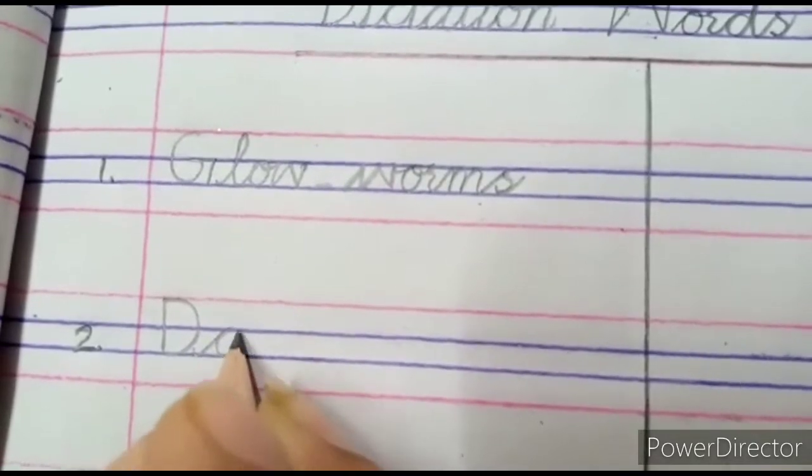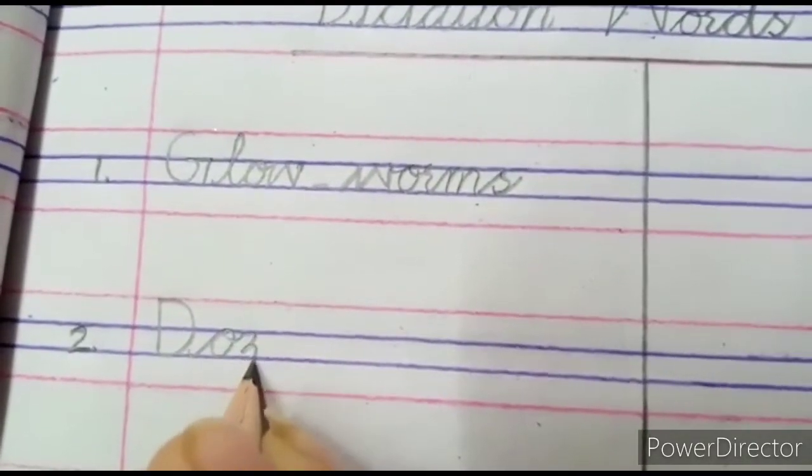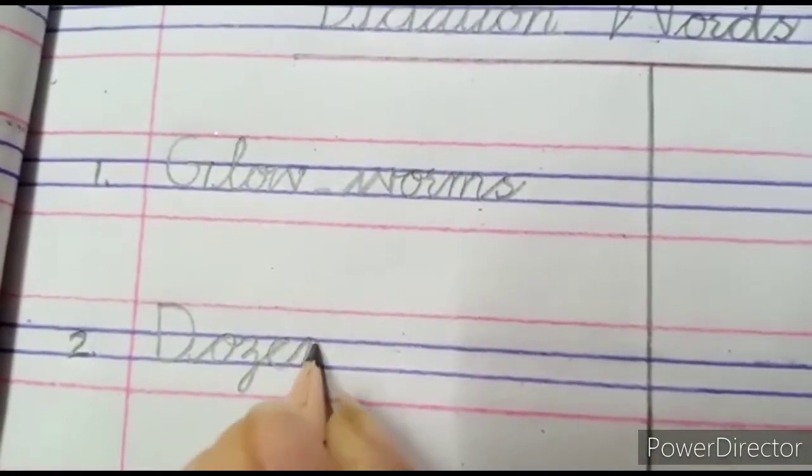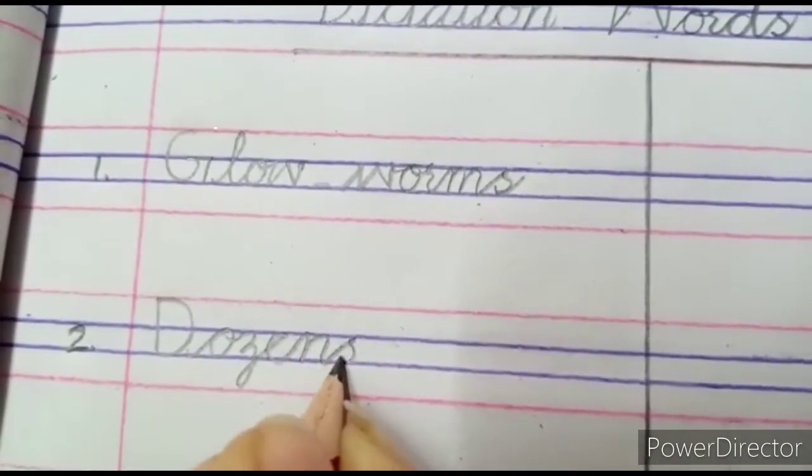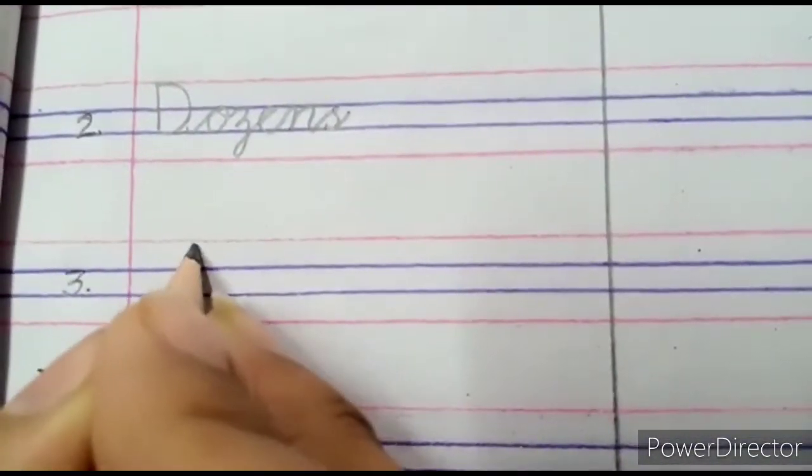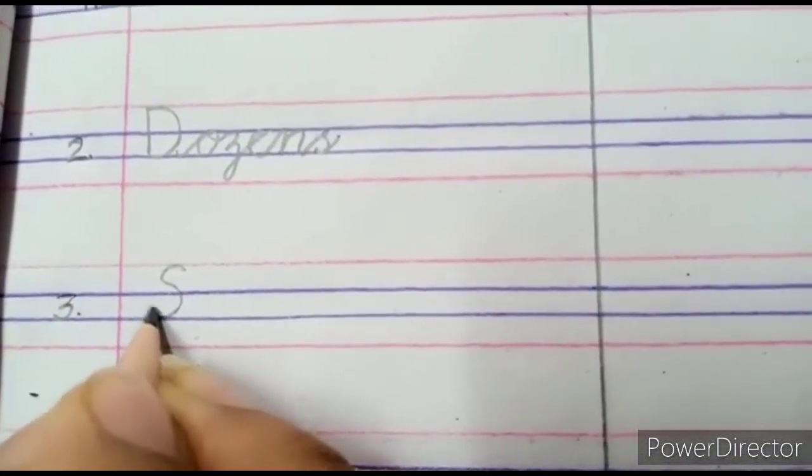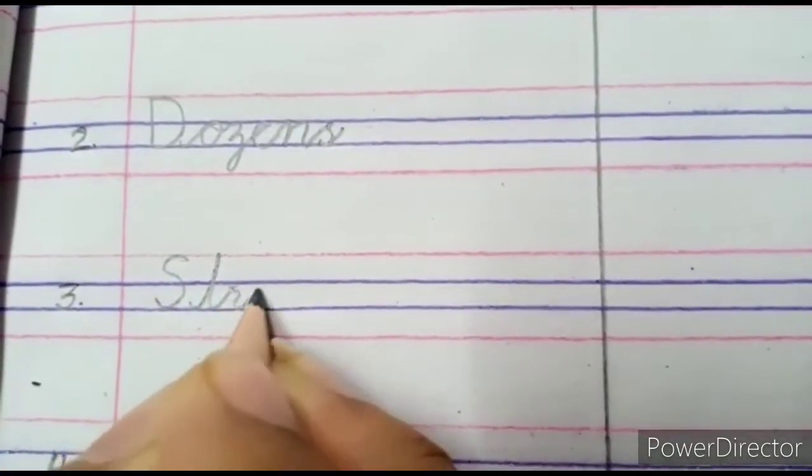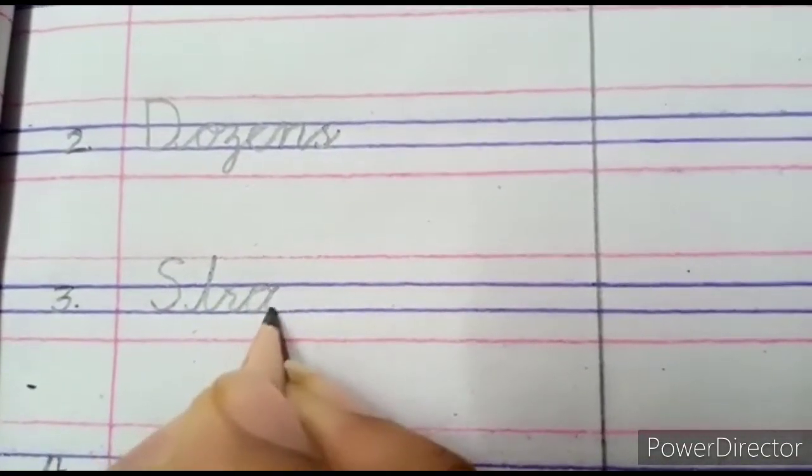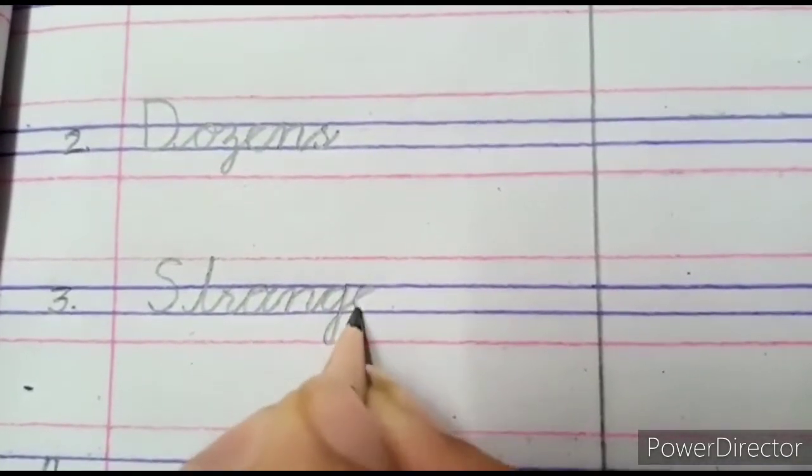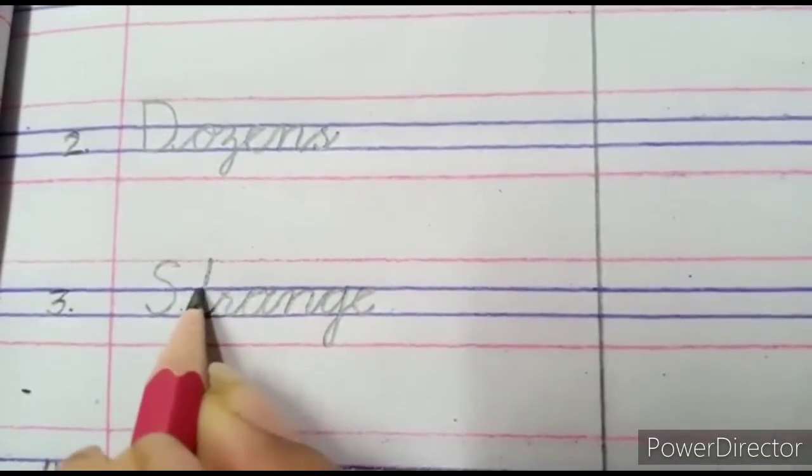We have to write it and our third word is Strange. Strange S-T-R-A-N-G-E Strange. Now dear when you put this T, we will not put it here but we will put it here so that it will be clear.